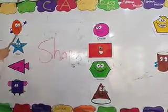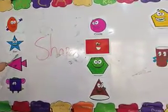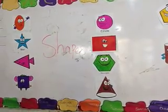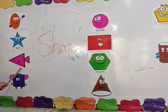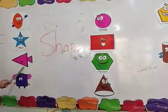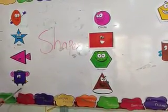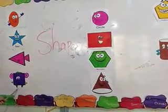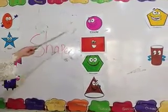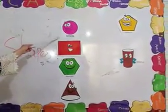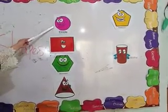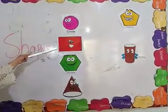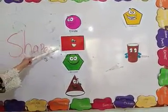Which shape is this? Oval. Which shape is this? Star. Which shape is this? Triangle. Which shape is this? Square. Now tell me, which shape is this? Circle. Which shape is this? Circle. And which shape is this? Rectangle.